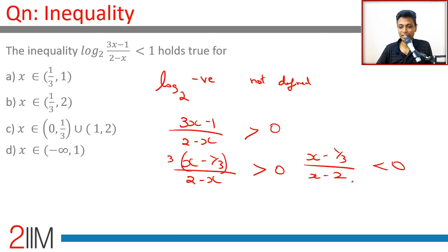(x-1/3)/(x-2) is less than 0, or x should belong to the range 1/3 to 2. This is a starting point even without going to the inequality part.